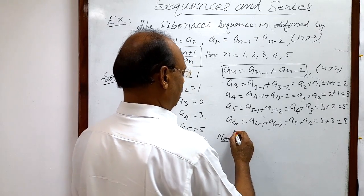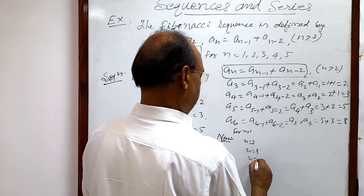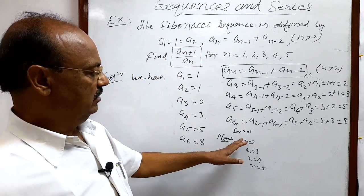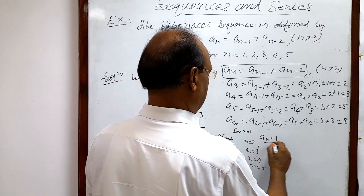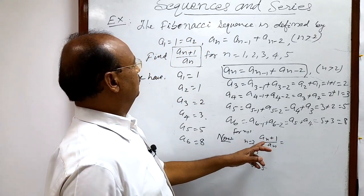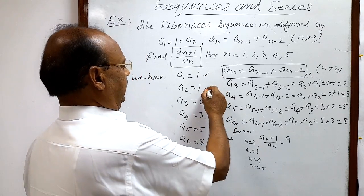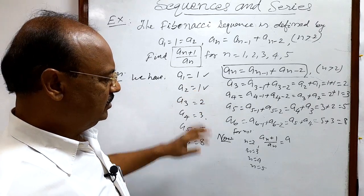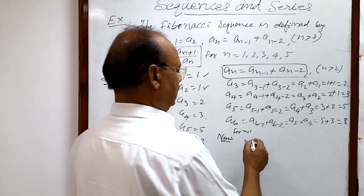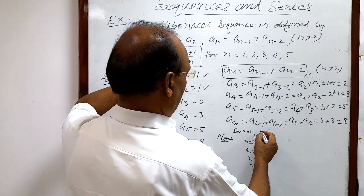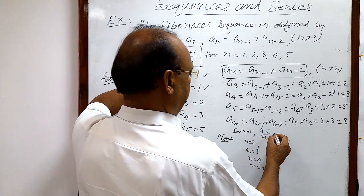Now let us evaluate the expression a(n+1) / a(n) for n = 1, 2, 3, 4, 5. For n = 1, this expression becomes a(1+1) / a1 = a2 / a1.